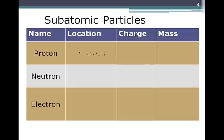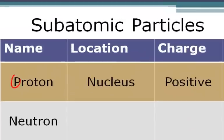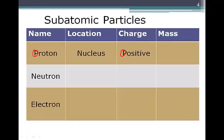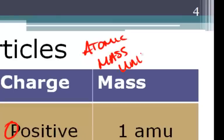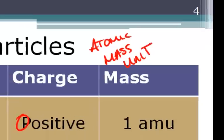The proton is found in the nucleus. The proton is positive, and the mass of a proton is 1 amu — amu stands for Atomic Mass Unit.